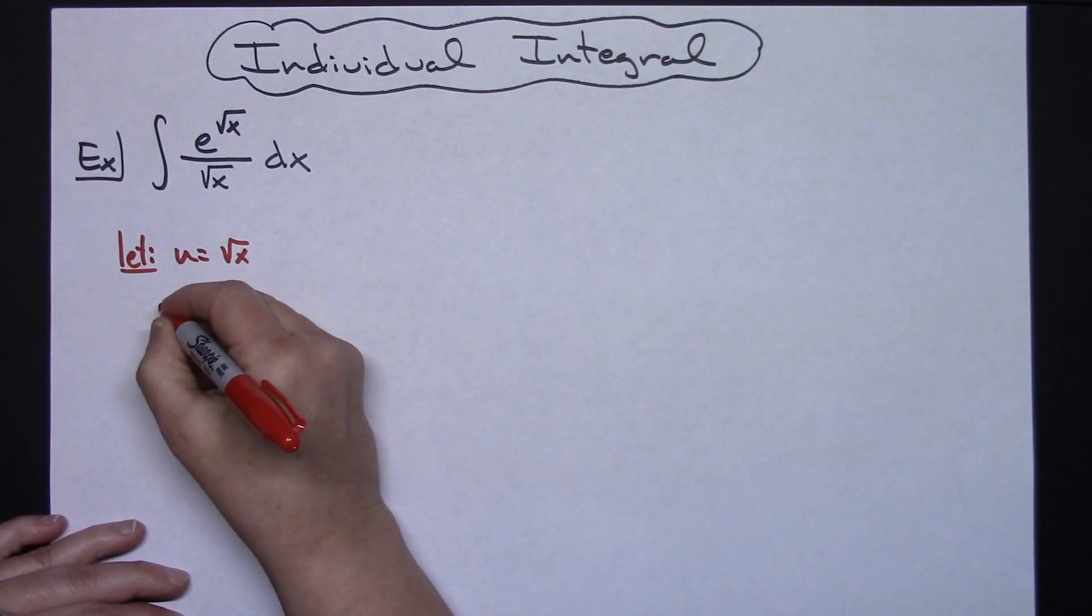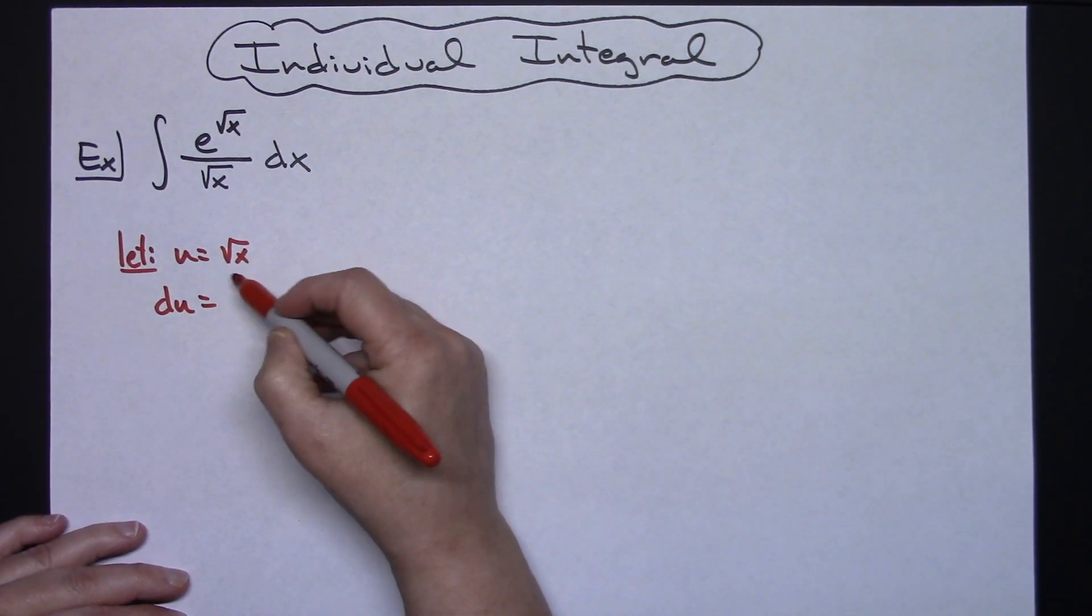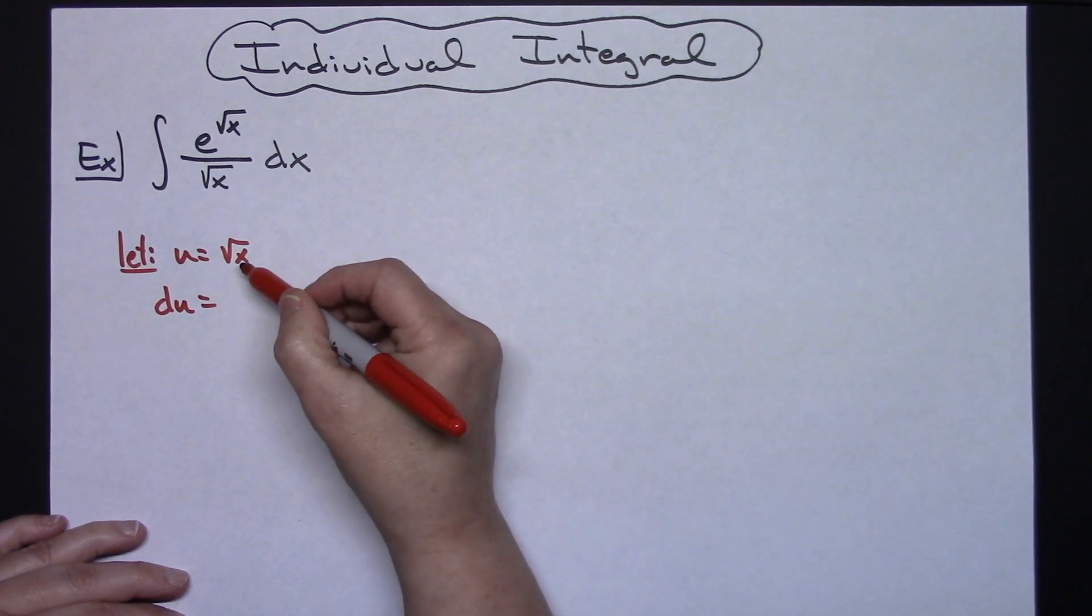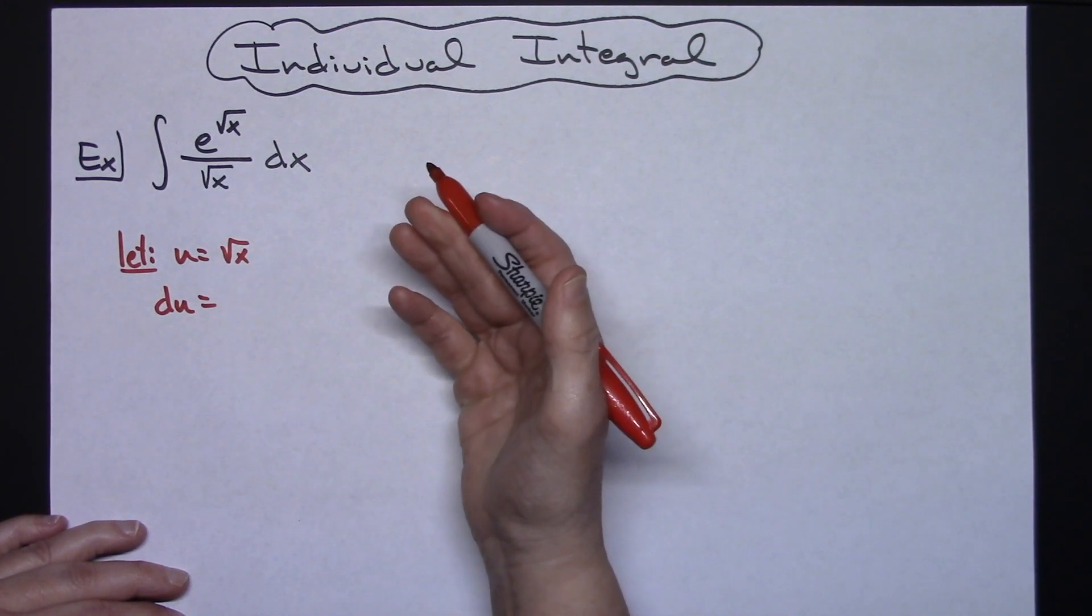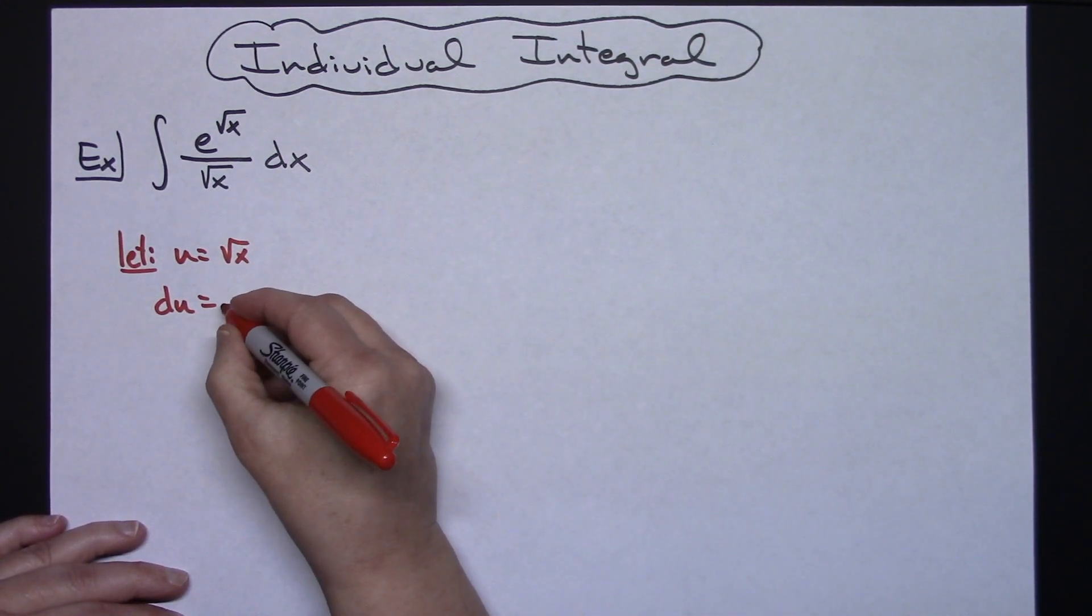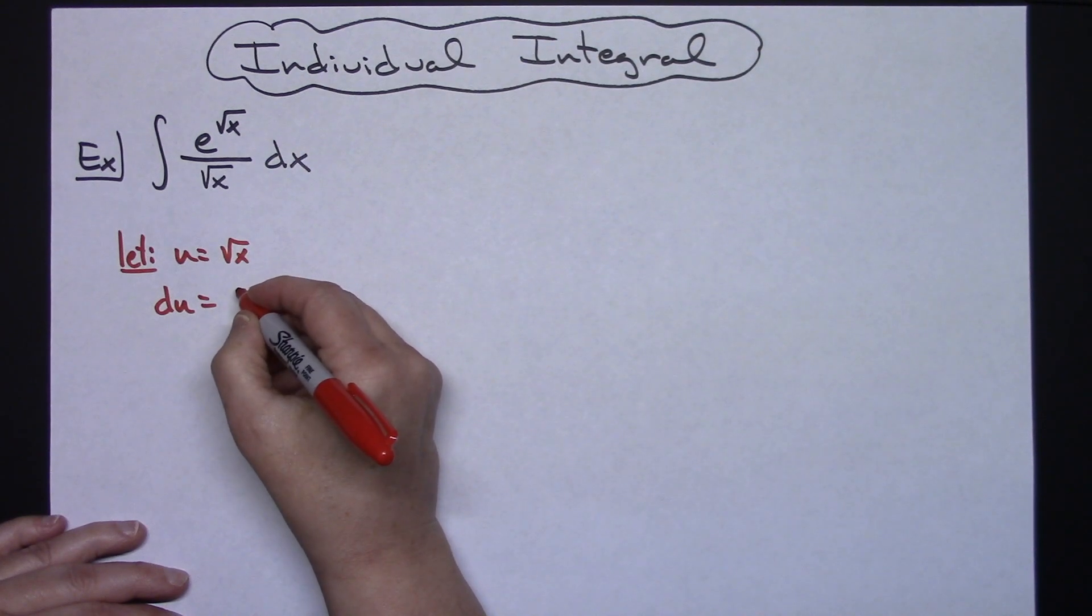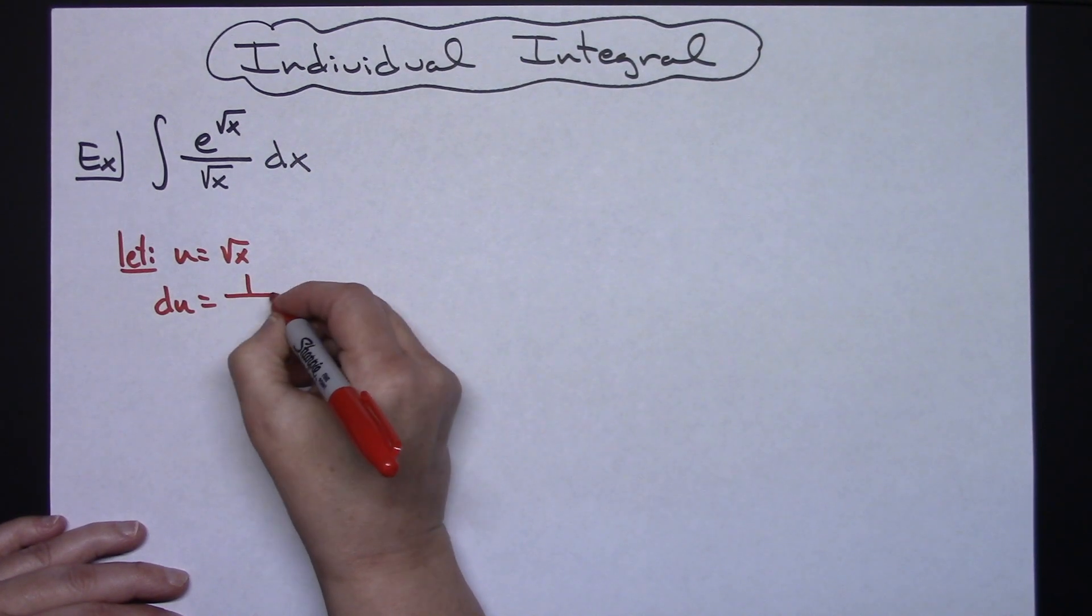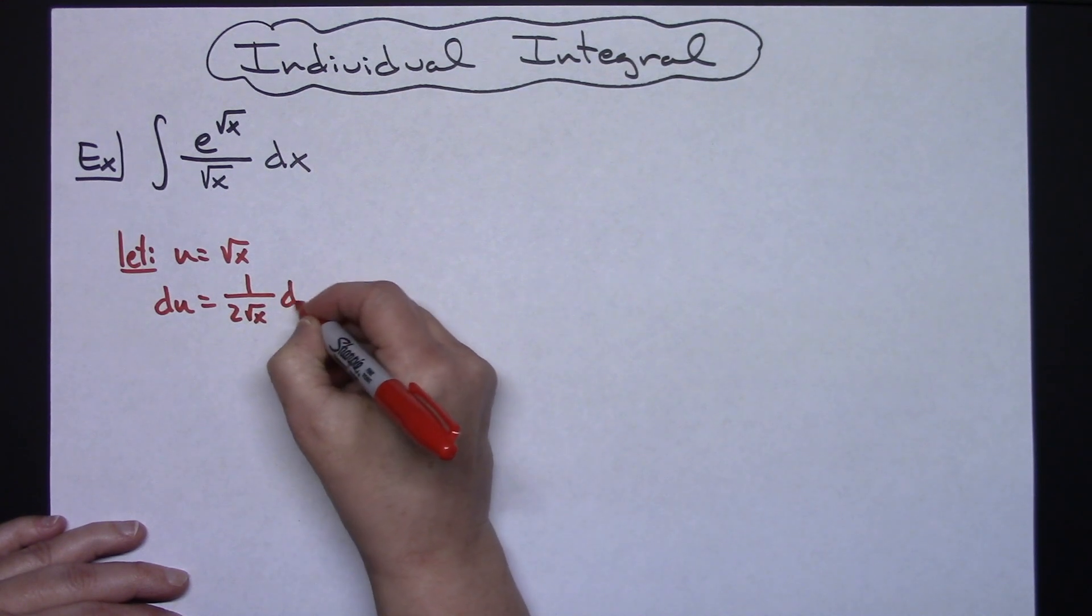We're going to take the derivative of both sides. We'll have du is equal to, on this derivative if you need to rewrite that as x to the 1 half and then take time to work that out you can go ahead and pause the video. Otherwise I'll just go ahead and give you the derivative as 1 over 2 square root of x dx.